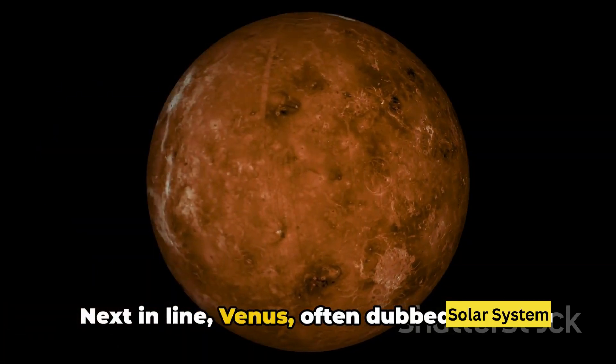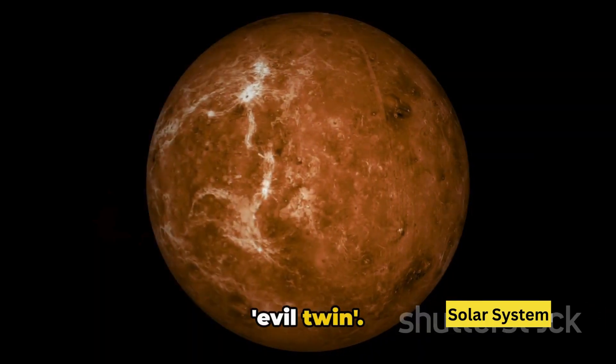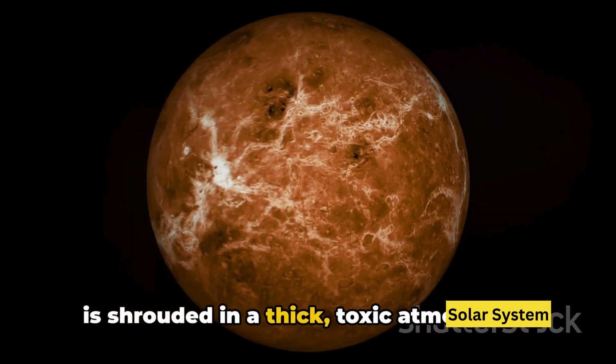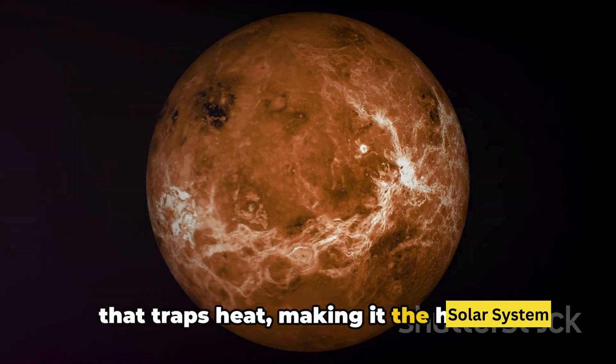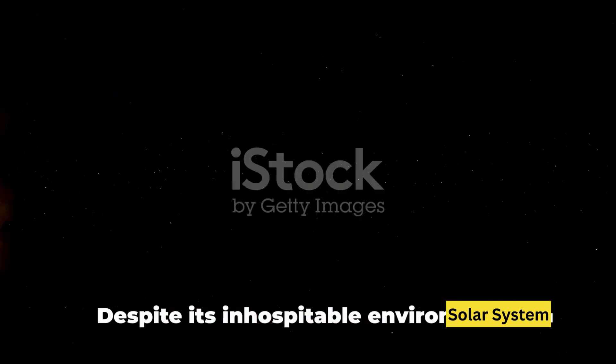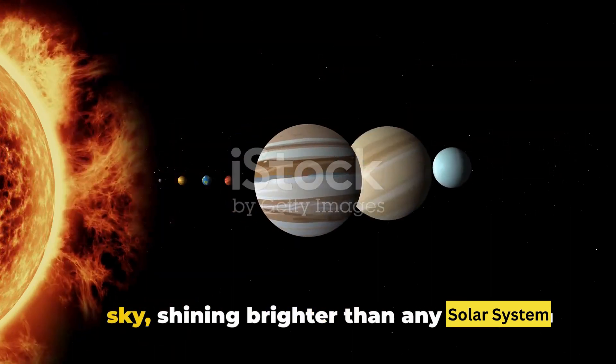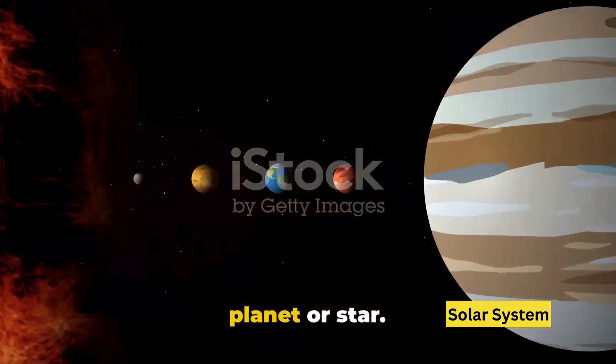Next in line, Venus, often dubbed Earth's evil twin. Similar in size to our home planet, Venus is shrouded in a thick, toxic atmosphere that traps heat, making it the hottest planet in our solar system. Despite its inhospitable environment, Venus is a beauty to behold in the night sky, shining brighter than any other planet or star.